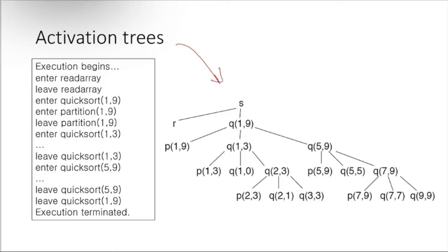In the activation tree, r represents the array. At the top, quicksort has elements one to nine. It is partitioned into one-to-four and five-to-nine. The partition function splits: three elements on one side, and the fifth through ninth elements on the other side.